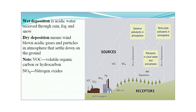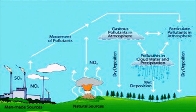Acid rain can occur as wet deposition — acidic water received through rain, fog, and snow — or as dry deposition, where wind-blown acidic gases and particles settle down on the ground. Sources include volatile organic compounds (VOCs) and nitrogen oxides (NOx). Sulfur dioxide and nitrogen oxides are produced from man-made sources like industries and factories, as well as natural sources like volcanic eruptions, and both release NO2 and SO2 into the atmosphere.